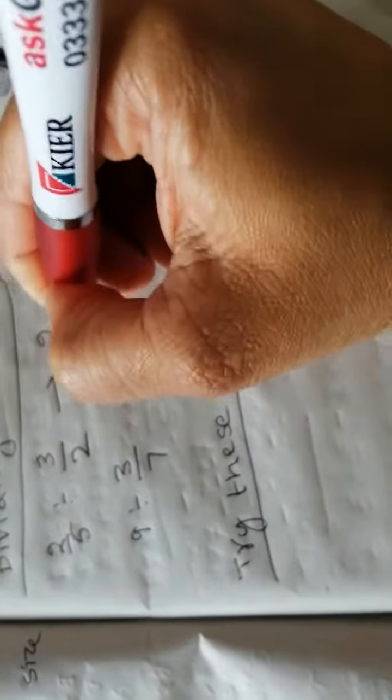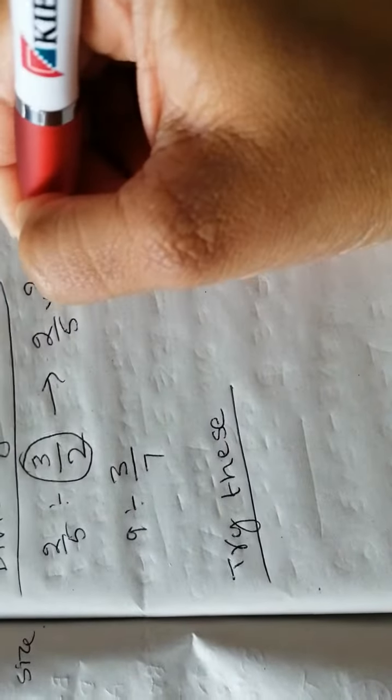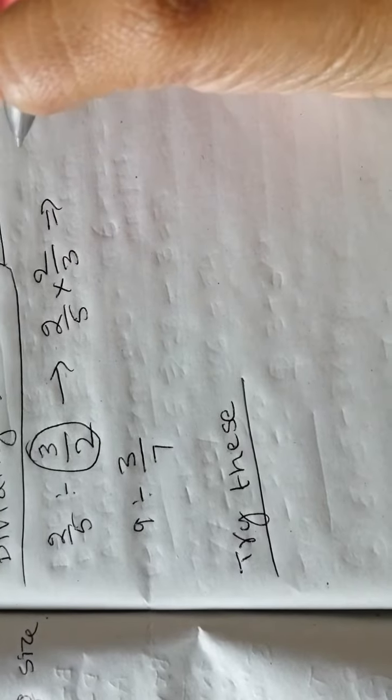So all you need to do is 2 over 5 times. You need to flip over these fractions and do it as multiplying fractions.